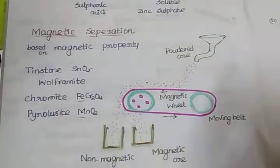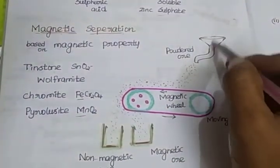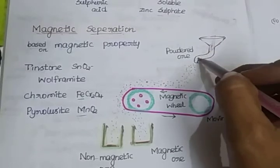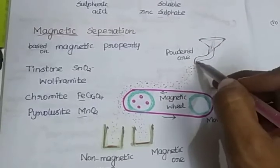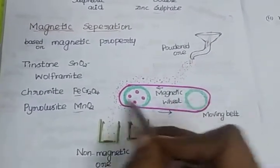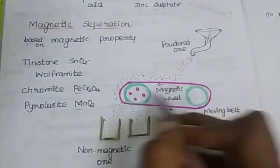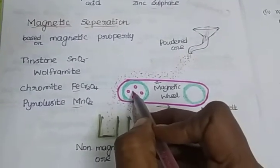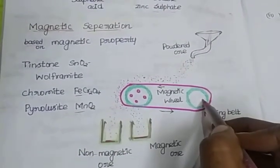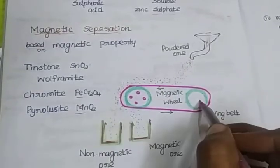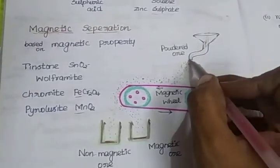The ore is crushed into powder and the machine is set up. It has a moving belt with two wheels - one is a magnetic wheel and the other is a non-magnetic wheel. The moving belt rotates and the crushed ore is fed into the machine.